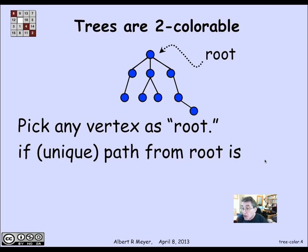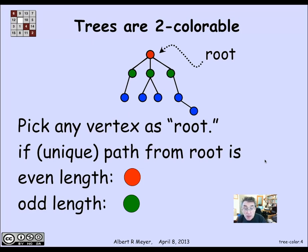And so we're just going to color vertices by whether the path from the root is of odd or even length. If it's of even length, color it red. And if it's of odd length, color it green.